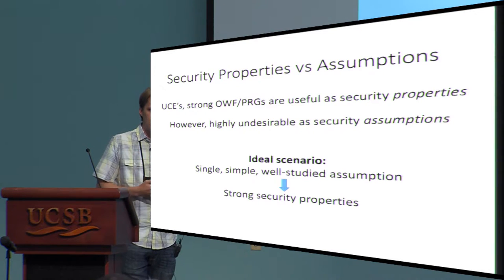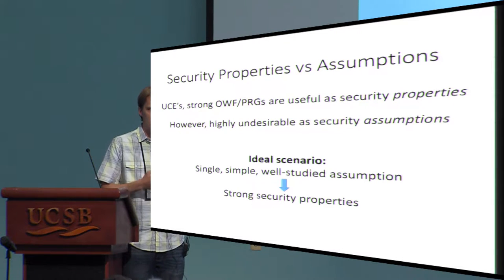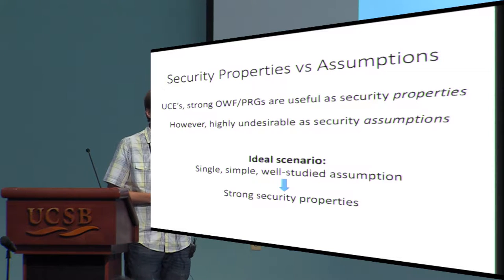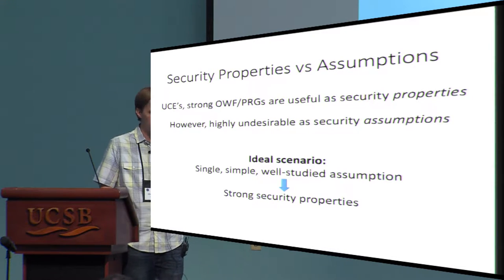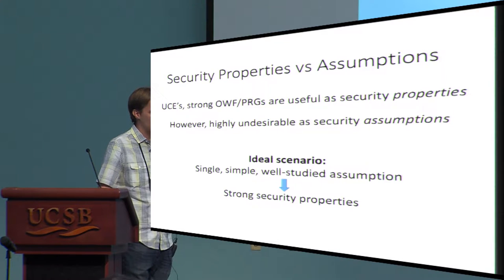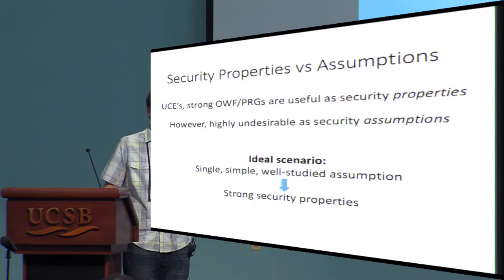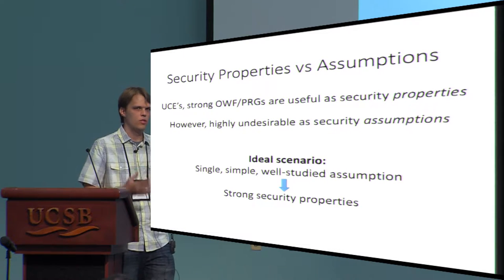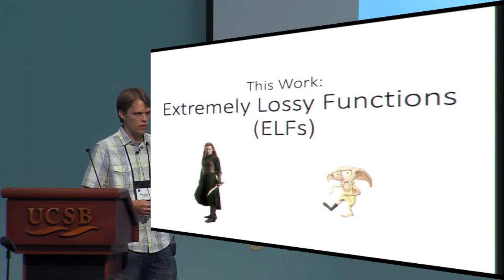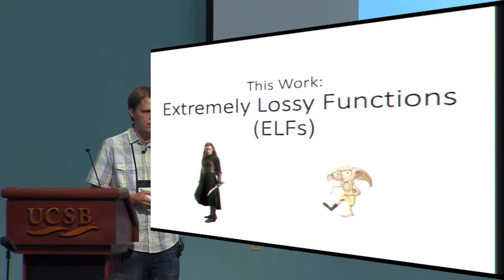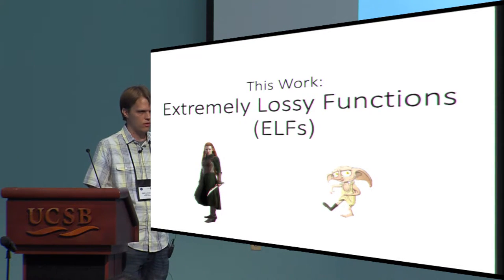These definition families are actually very useful as security properties — that's the whole point of the literature defining them. But they are highly undesirable as starting points, as assumptions to begin with. The ideal scenario is to use a single, simple, well-studied assumption: one I can post challenges on the web for, gain confidence no one can break, and then derive these strong security properties from it. That's where this work comes in. Using a new tool called Extremely Lossy Functions, or ELFs, we show how to take a single simple assumption and derive interesting consequences for instantiating random oracles.